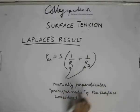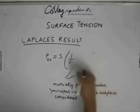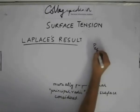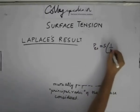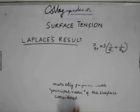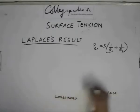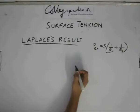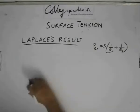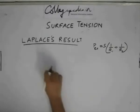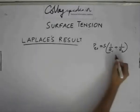Now what does mutually perpendicular principal radii mean? Let me write the result here sideways so that we can refer it as and when required. So this is our Laplace's result and now what we will see is what are the mutually perpendicular principal radii. This means that if we can determine two different radii of any surface, they should be mutually perpendicular for them to be applicable within this formula.